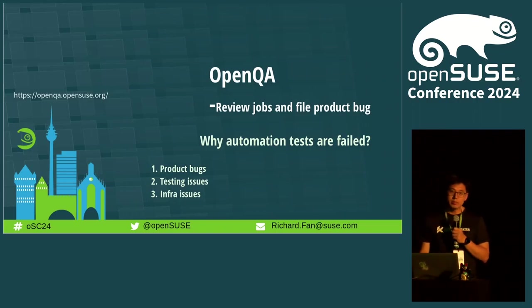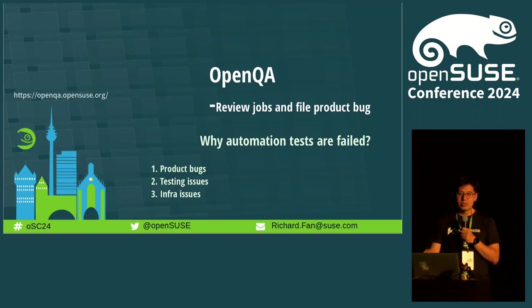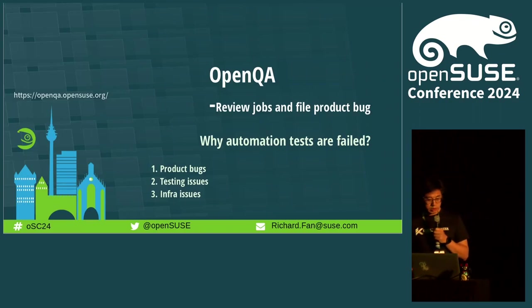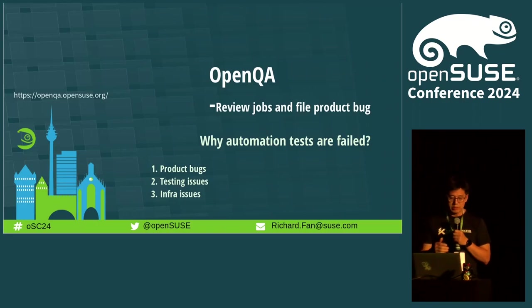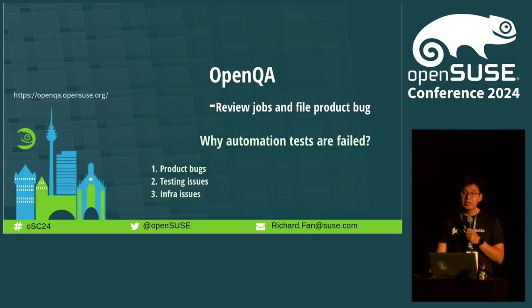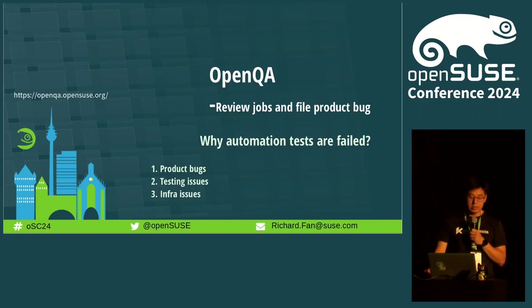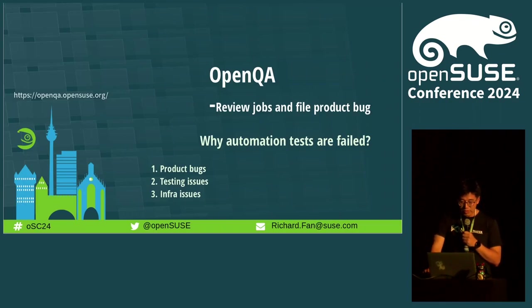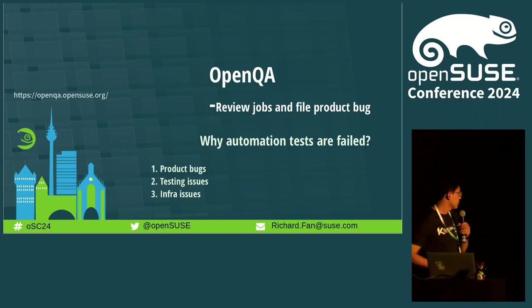As you know, my teammates Oliver and Santi have introduced a lot about our OpenQA framework. But as a QE engineer, I want to do some description for us. If you added some tests into the OpenQA framework and hit some issues - tests are failing - how can we handle this? In general, the failures are caused by three reasons.